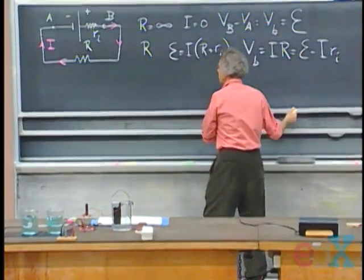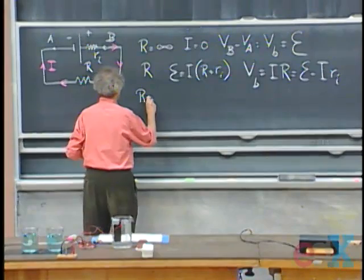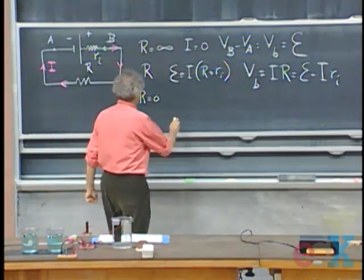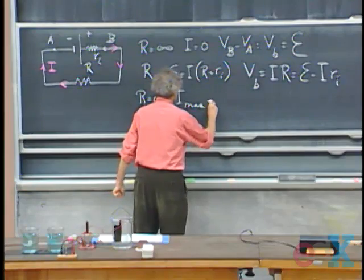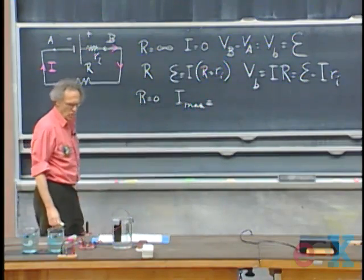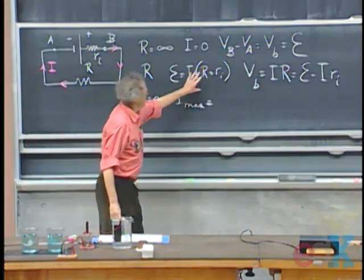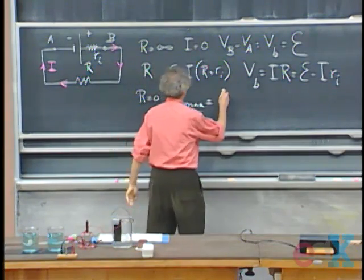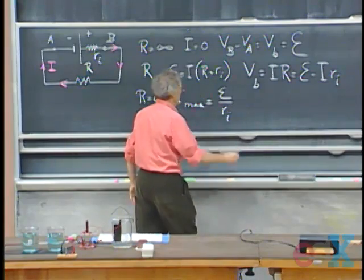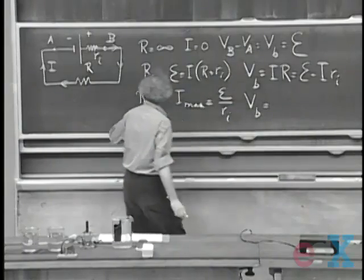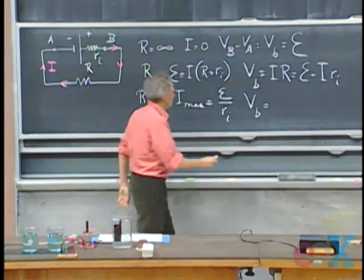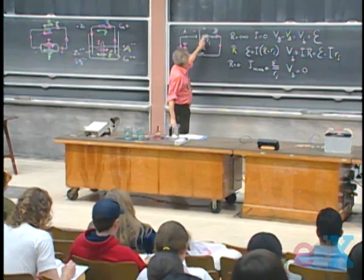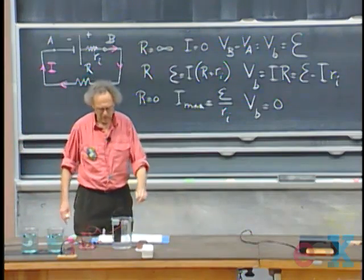If I shorted out this battery — stupid thing to do — if I make R equal to zero, the maximum current you can get is EMF divided by r_i. And the voltage V_B that you would measure between points B and A goes to zero. It doesn't mean there is no current running, but it means the potential difference between these points goes down to zero.